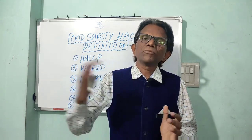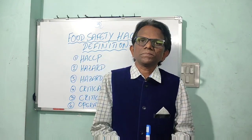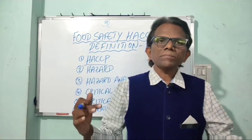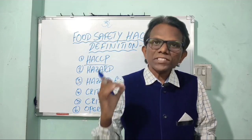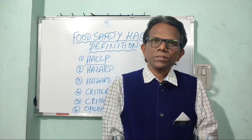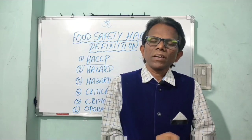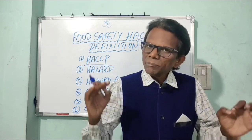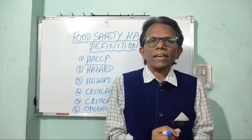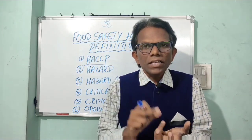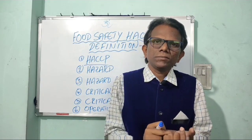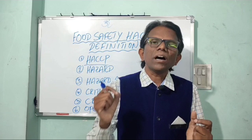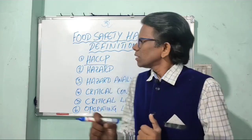The first definition is HACCP, which stands for Hazard Analysis Critical Control Point. The definition of HACCP — it is a management tool used to protect the food supply against biological, chemical, and physical factors. The main purpose of the HACCP system is to produce safe food to the end user or consumer.